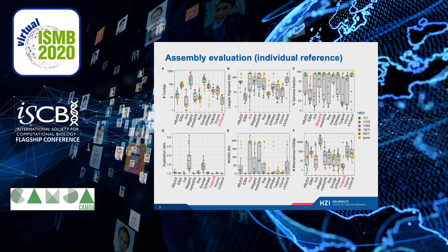We also evaluated the assemblers based on the individual reference, which reflects the ability to reconstruct underlying strains in the mixture. The different colors of the dots indicate the abundance of the strain in the mixture; yellow shows the pure strain samples. It shows that IVA produced the most contigs and the largest NGA50 contig. Suffrage reconstructs the large fraction of both minor and major strains in the mixture, while IVA, MetaSpace, and Velvet reconstruct the dominant strain very well. Tadpole had the fewest misassemblies.